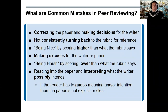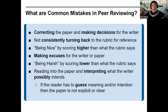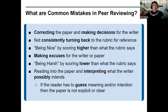Now that we've walked through the questions you need to ask your classmate, let's address some common mistakes that occur in peer review. The first and most important one: correcting the paper and making decisions for the writer. Our job as a reviewer is to guide and point out what we see, not to offer corrections. The writer has to make the decision to change their writing based on your conversation with them — it's their responsibility. Another mistake is not consistently turning back to the rubric for reference. The rubric is the go-to, as the paper is ultimately judged by the rubric, so refer to it often.